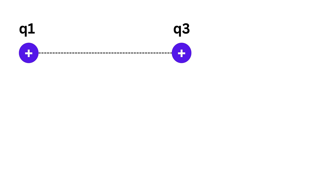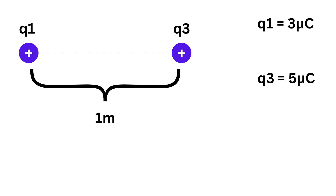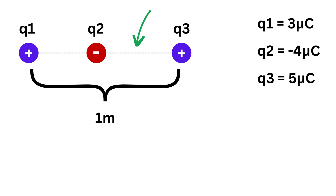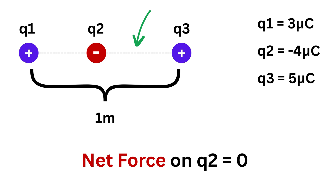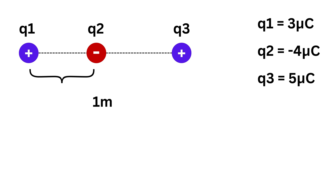In our first problem, we have two positive charges: q1 of 3 micro-coulombs and q3 of 5 micro-coulombs, with a distance of 1 meter between them. These charges are fixed in space and cannot move. We want to place a third charge q2 of −4 micro-coulombs somewhere on this line such that no net force acts on it — meaning the forces due to q1 and q3 on q2 exactly cancel each other out.